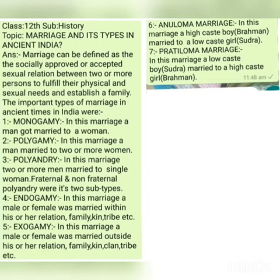Number six, anuloma marriage. Anuloma was a marriage in ancient times in which a high-caste boy — for example, a Brahman boy — got married to a lower-caste girl — for example, a Sudra girl.